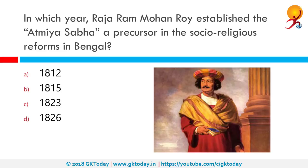In which year did Raja Ram Mohan Roy establish the Aartiya Sabha, a precursor in the socio-religious reforms in Bengal? Aartiya Sabha was a philosophical discussion circle in India. The association was started by Ram Mohan Roy in 1815 in Kolkata. They used to conduct debate and discussion sessions on philosophical topics and promoted free and collective thinking and social reforms.